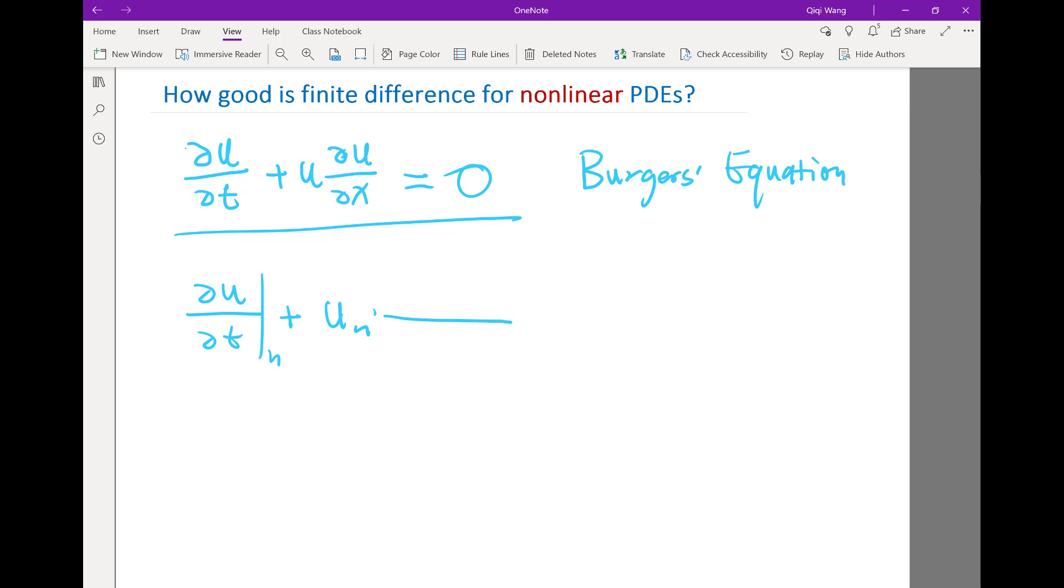Using an upwind manner means that if the wave is coming from the left, I should use a left biased derivative. If the wave is coming from the right, I should use a right biased derivative. And how do I know if the wave is coming from the left or the right? Look at the coefficient before the spatial derivative. So then this is going to be delta x. And there is an option. This is either un plus 1 minus un or un minus un minus 1. And which do I choose depending on what un is?